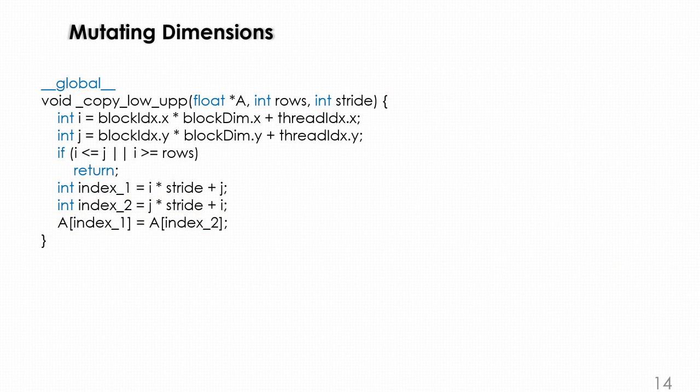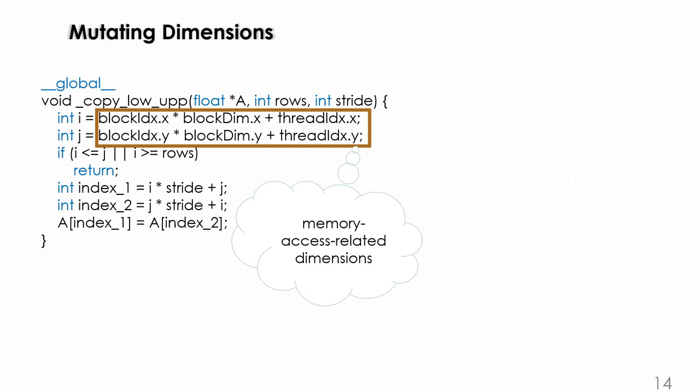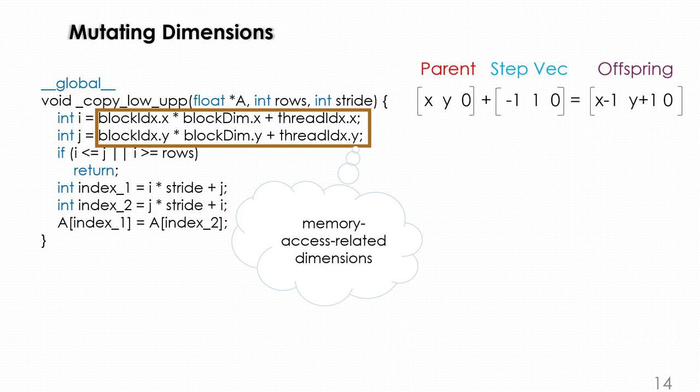We follow a different strategy when mutating dimensions. This type we call dimension because it is memory access related dimensions. We're randomly generating a slider vector ranging from -1 to 1 according to the dimension size and adding it to the original dimensions.